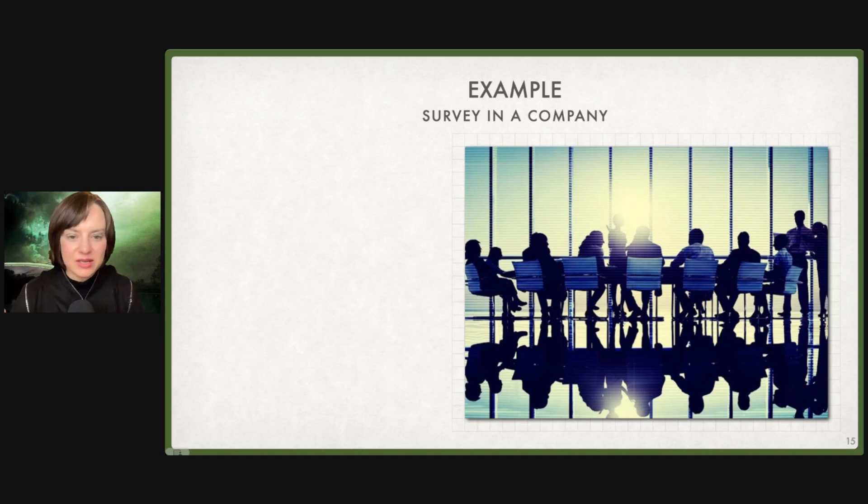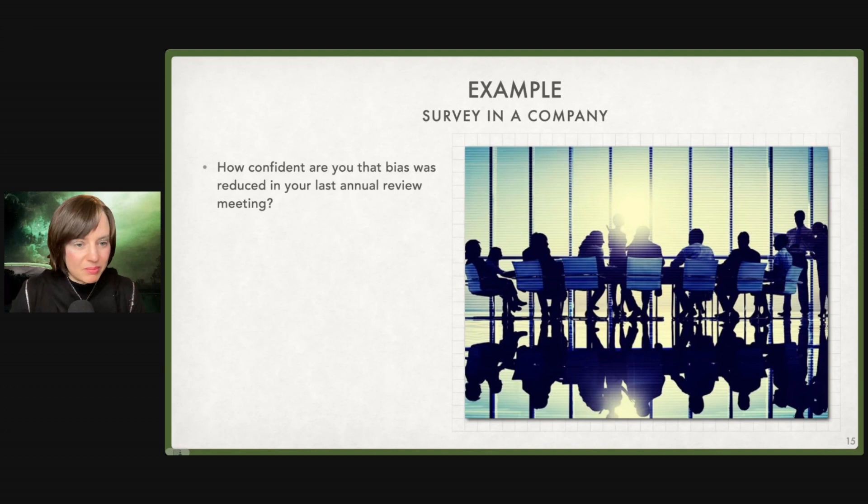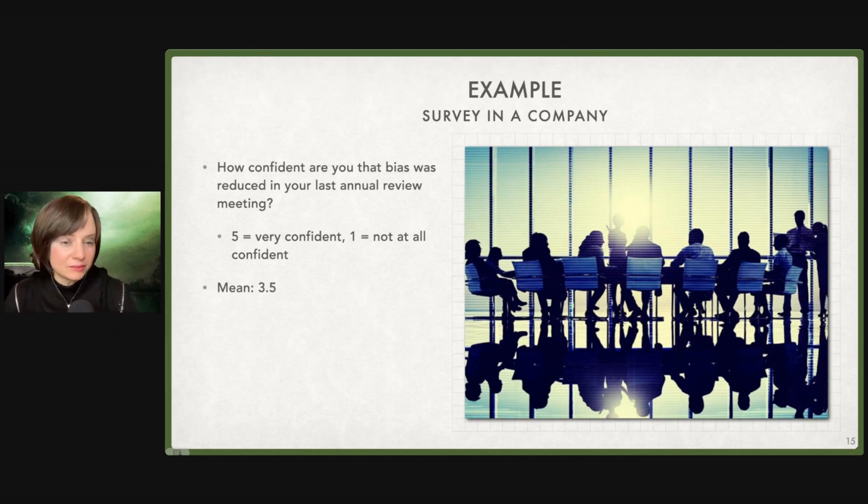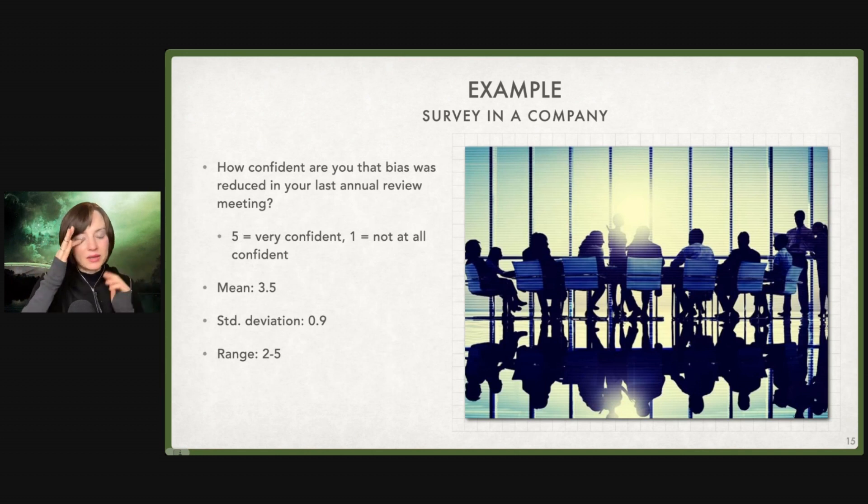So what's an example? Who cares? I work with a lot of companies and they conduct surveys. An example question might be, how confident are you that bias was reduced in your last annual review meeting? I do a lot of work around bias reduction in performance evaluation because performance evaluation is turning something complex like performance into a number and we hope we do it in a way that's not biased. Maybe the answers are five is very confident, four is somewhat confident, and on down. Usually companies report a mean and then they kind of stop and that makes me sad. The mean might be 3.5. A standard deviation of 0.9 tells us how spread out it is. The range, it's from two to five, so we had no ones. And the mode was four. So most people said somewhat confident.